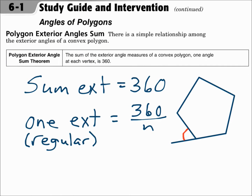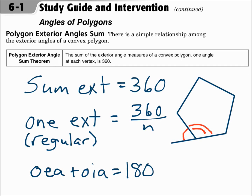The exterior angles of a polygon occur when you extend a side and find the angle between that extension and the next side. The sum of the exterior angles is 360 degrees — no matter how big the polygon is, no matter how many sides. For a regular polygon, one exterior angle is 360 divided by N. Also, one exterior angle and one interior angle form a linear pair, so one exterior angle plus one interior angle equals 180.